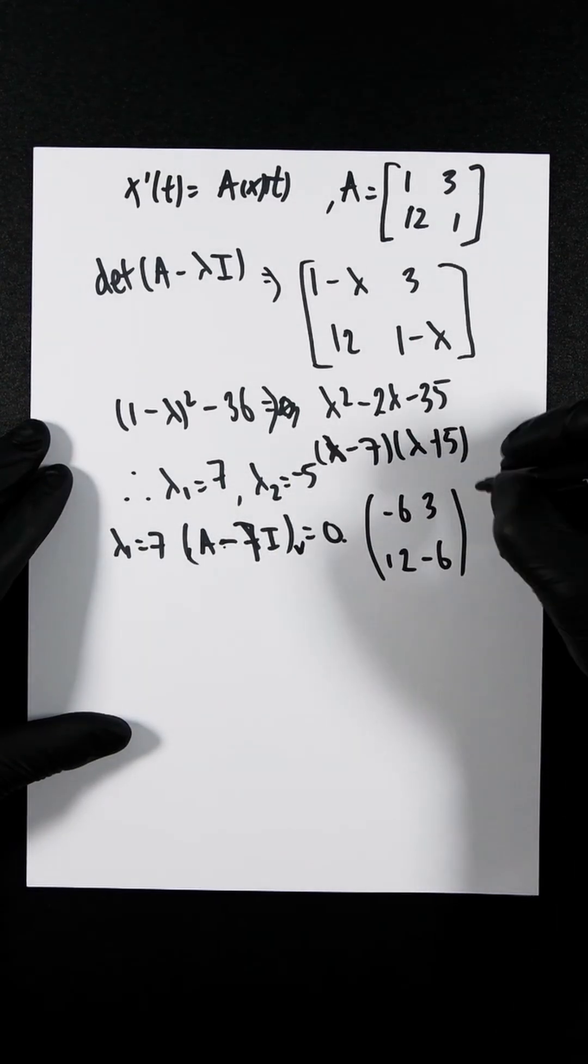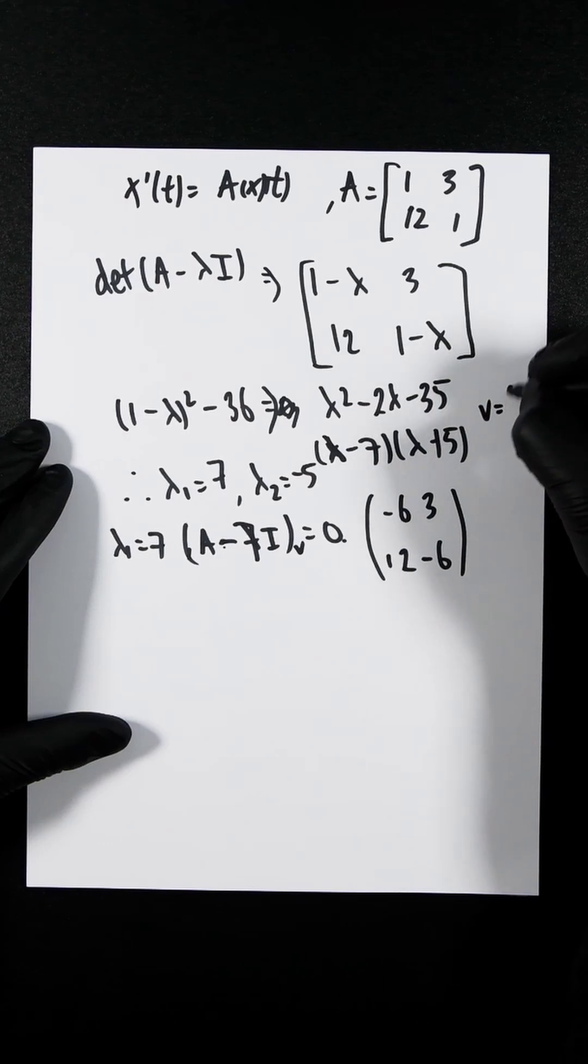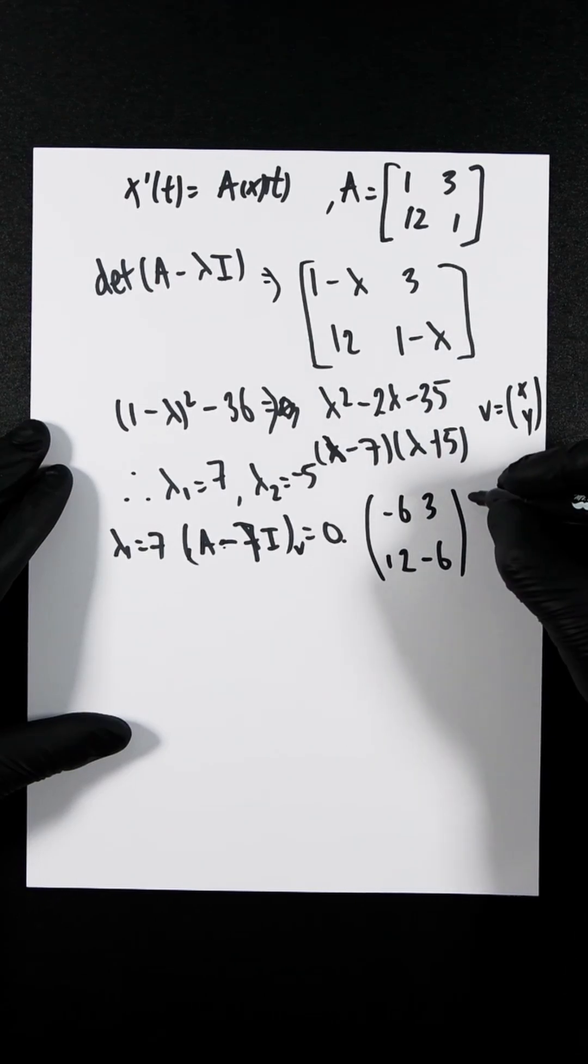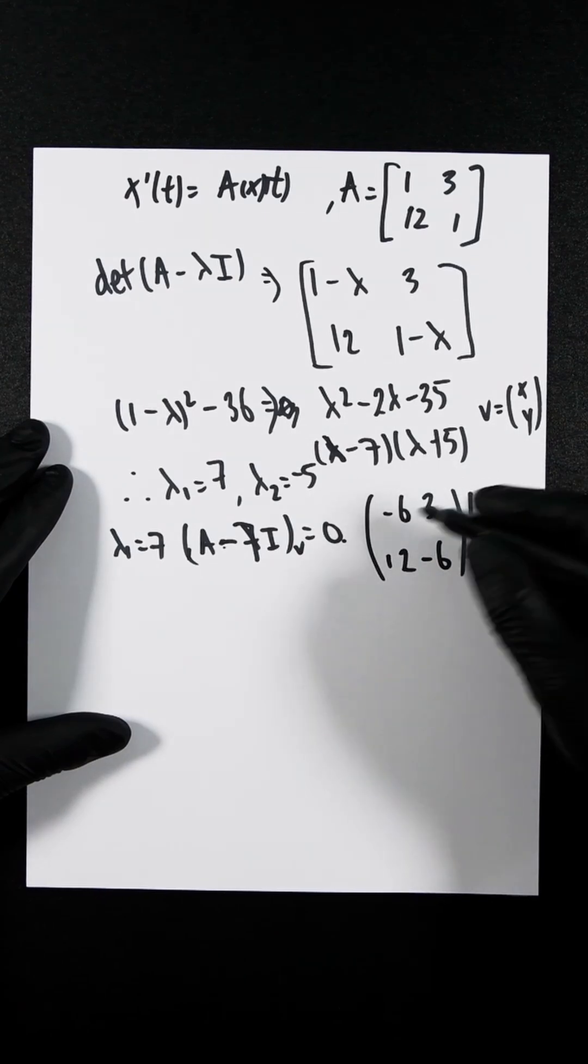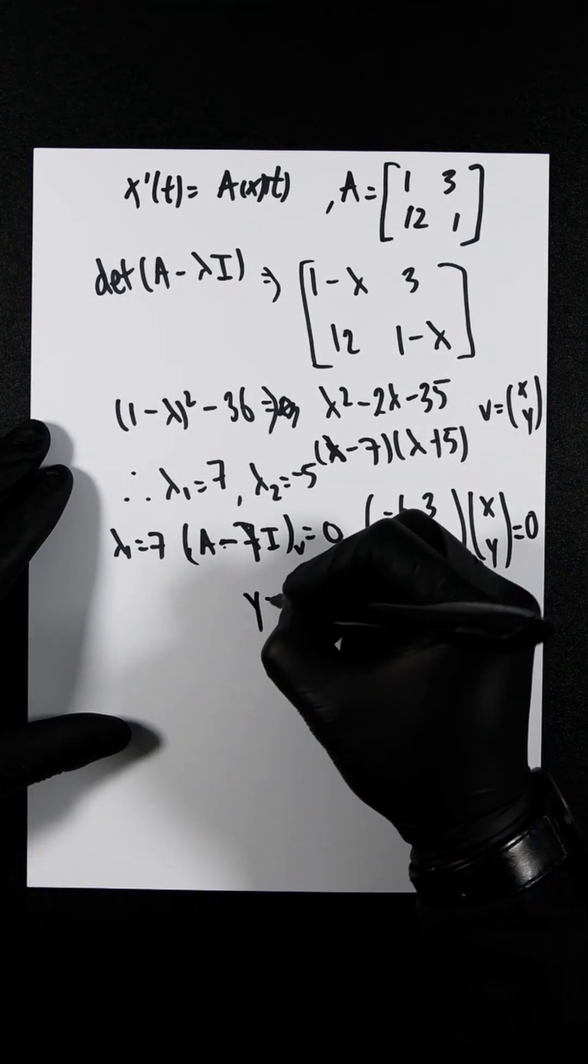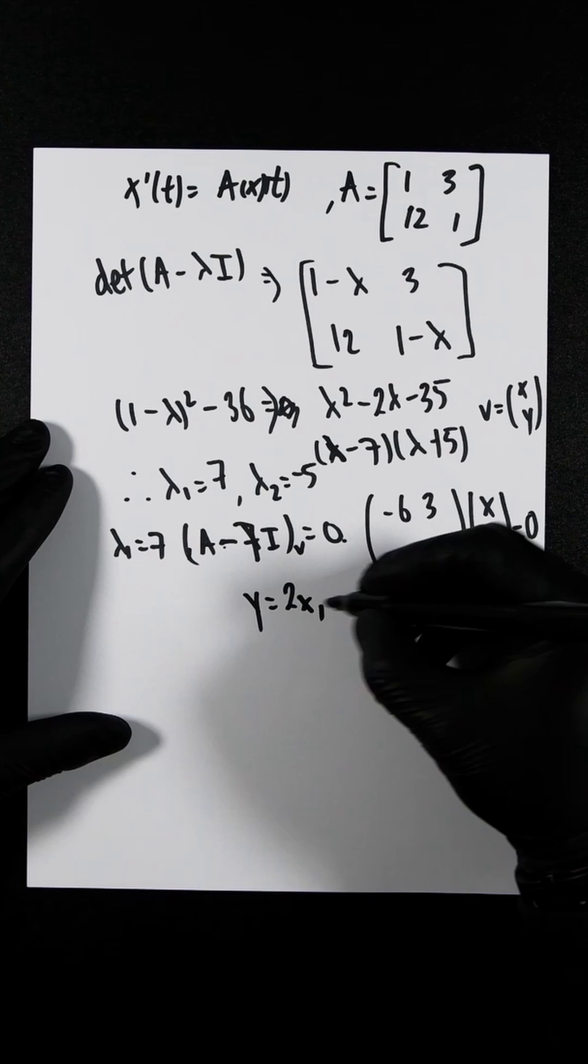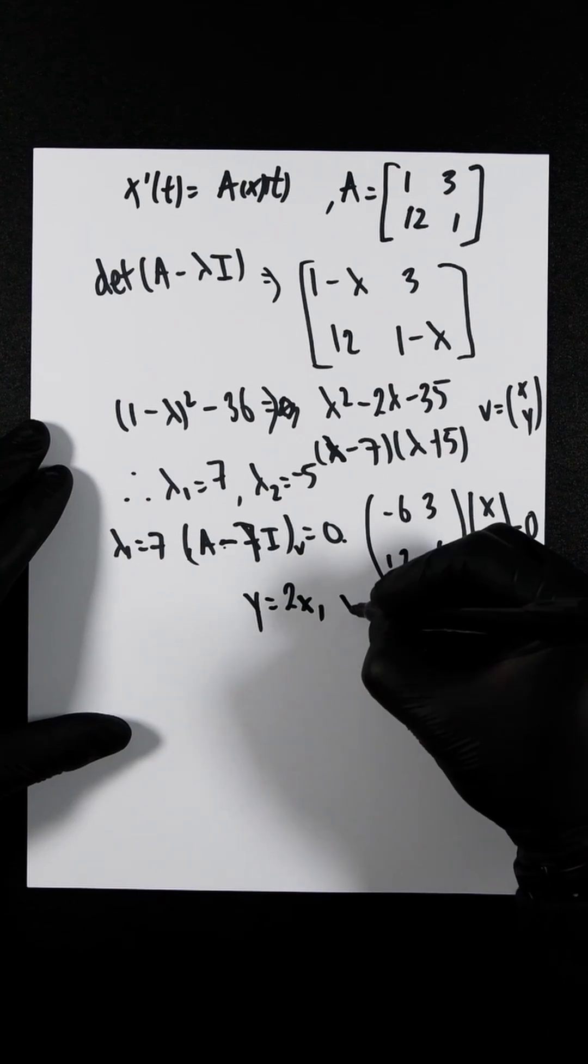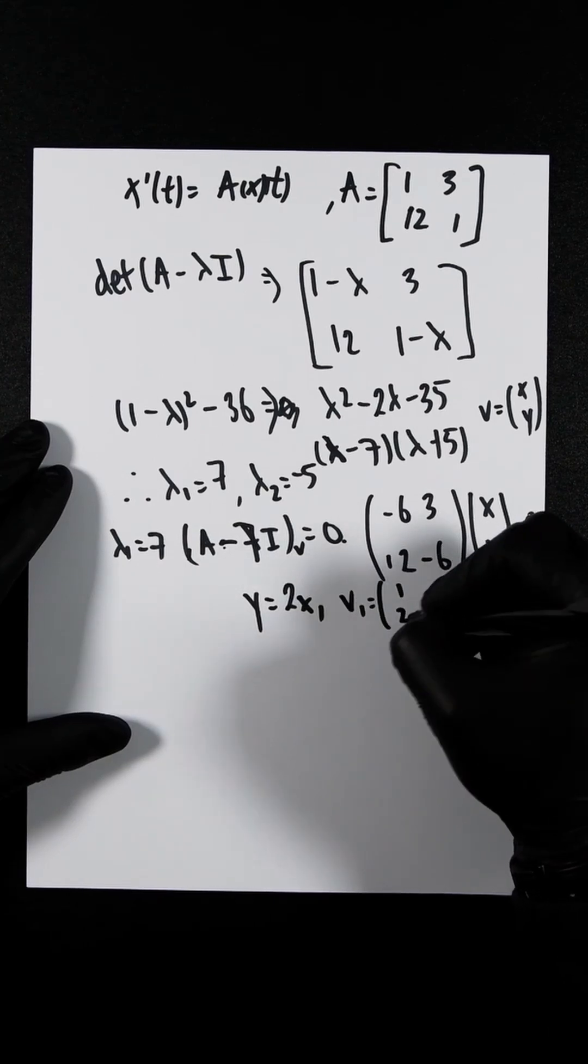This multiplies vector V, which is [x; y], giving us [x, y] equals 0. Expanding this out, we get y equals 2x. So the eigenvector V1 is [1, 2].